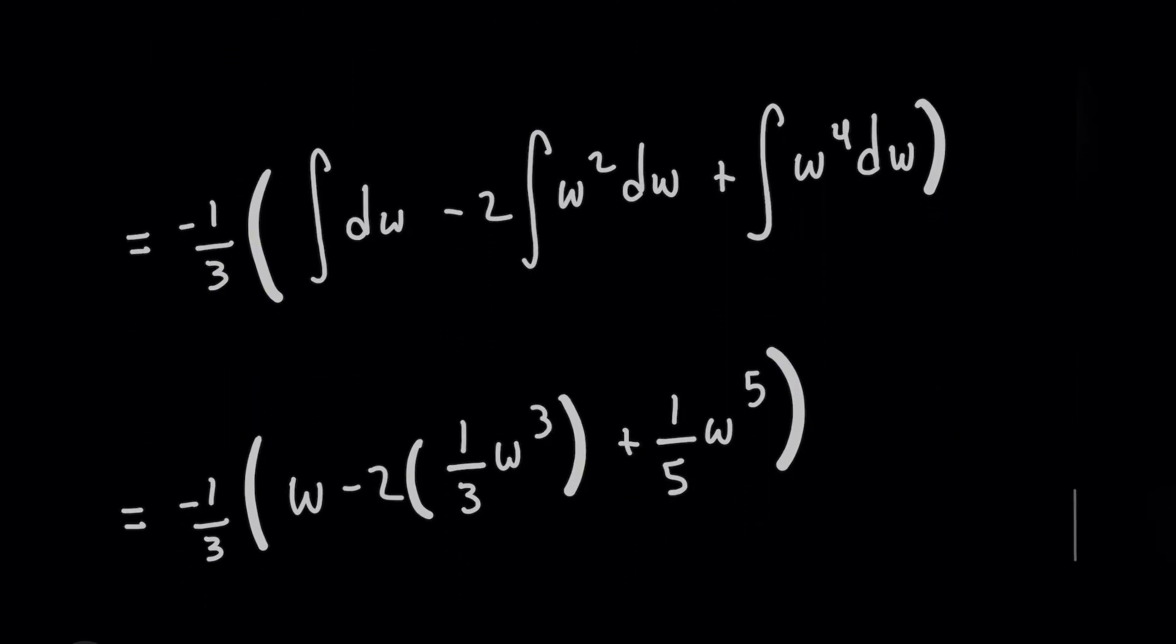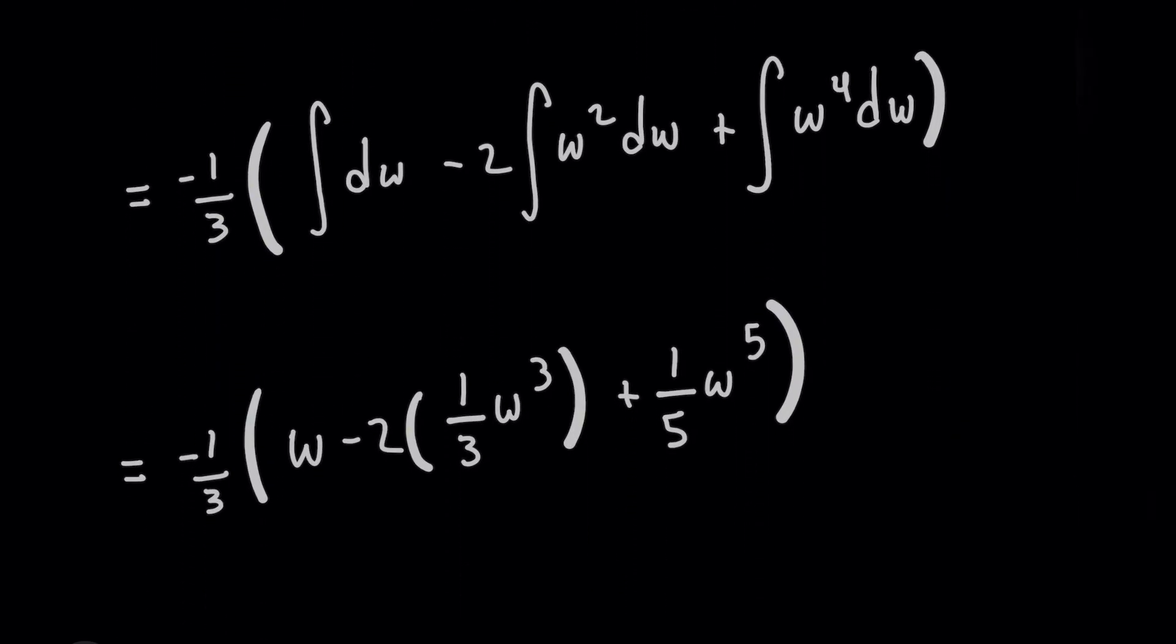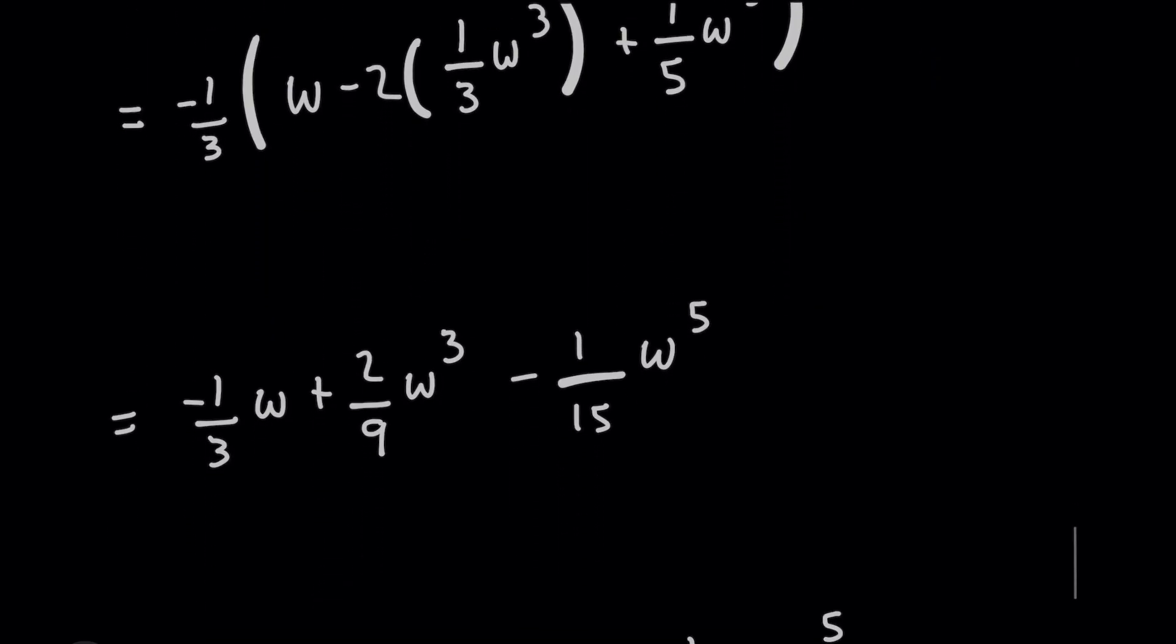So if I were to expand on this further, by solving those integrals, I'm not going to show the plus c yet until the very end. But in the inner side of this, we're going to get this w minus two times in parentheses, one third w cubed, plus one fifth w to the fifth. And then when I expand everything through by multiplying this negative one third term, I'm going to get this final expression in terms of w.